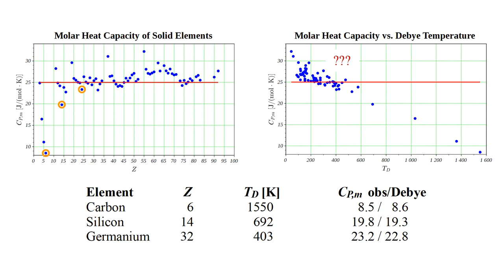Something the Debye model does not do is to explain heat capacities above the Dulong-Petit value. Although notice on the right plot that these are correlated with lower Debye temperatures. We will come back to this issue.